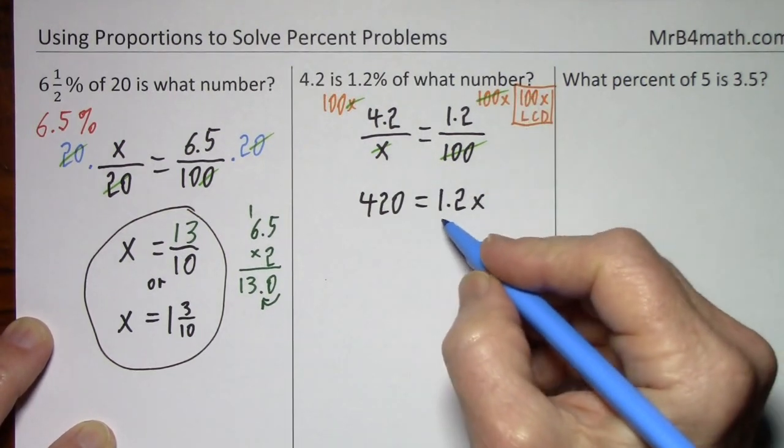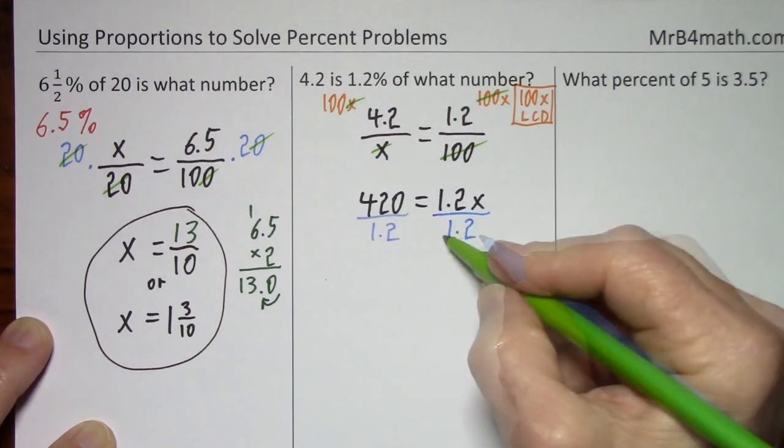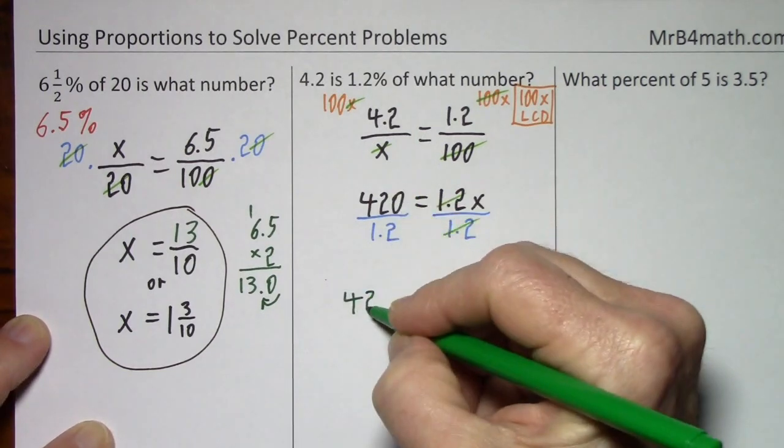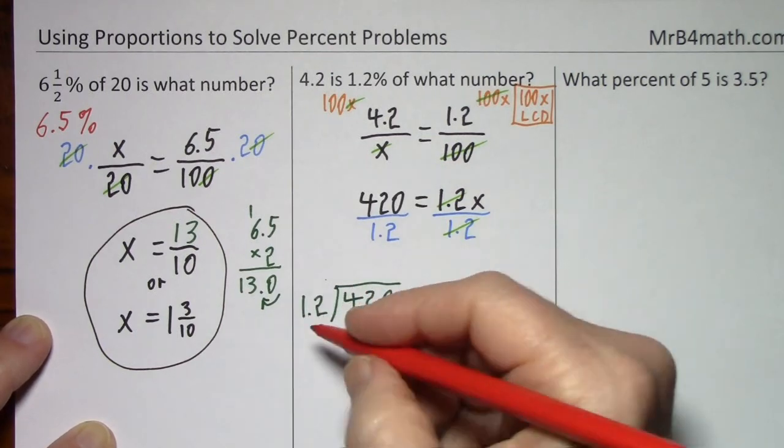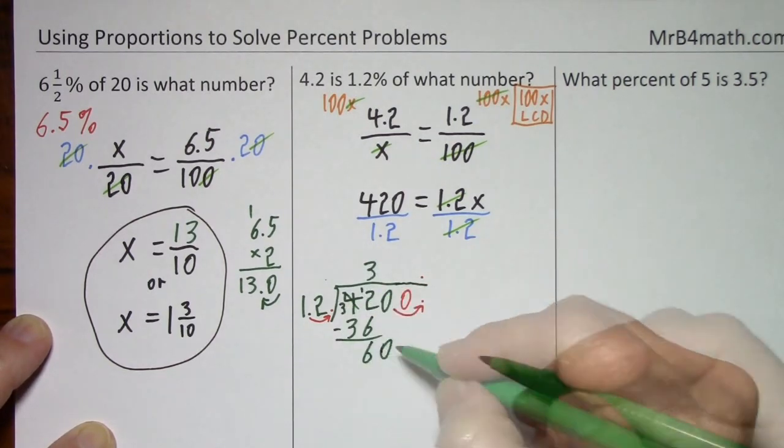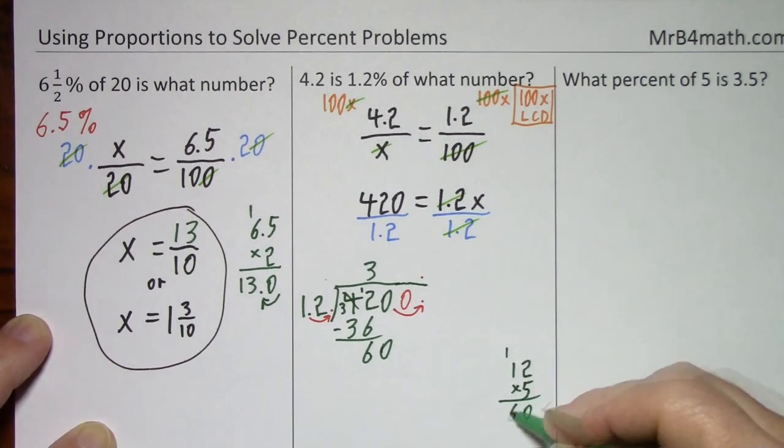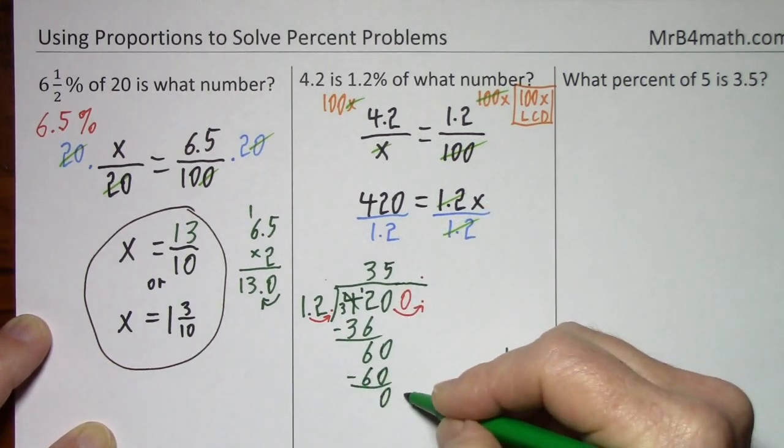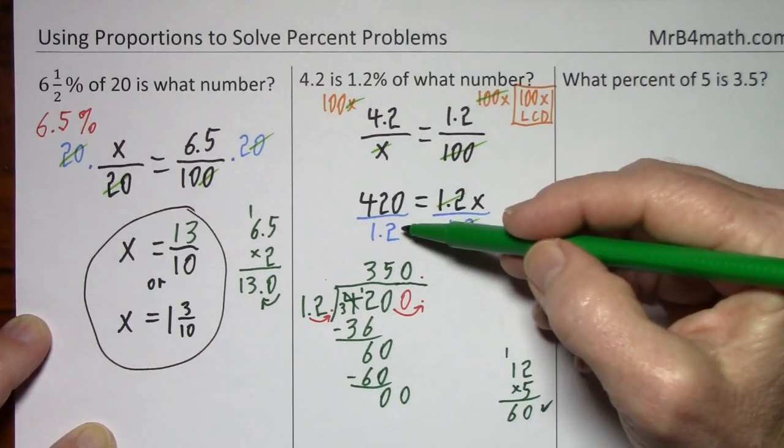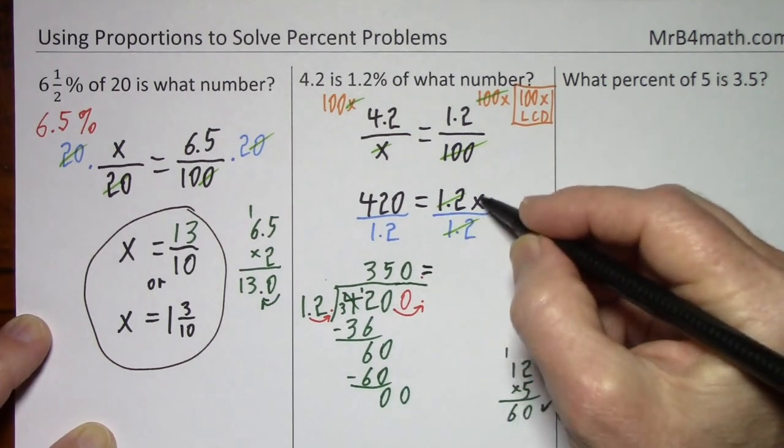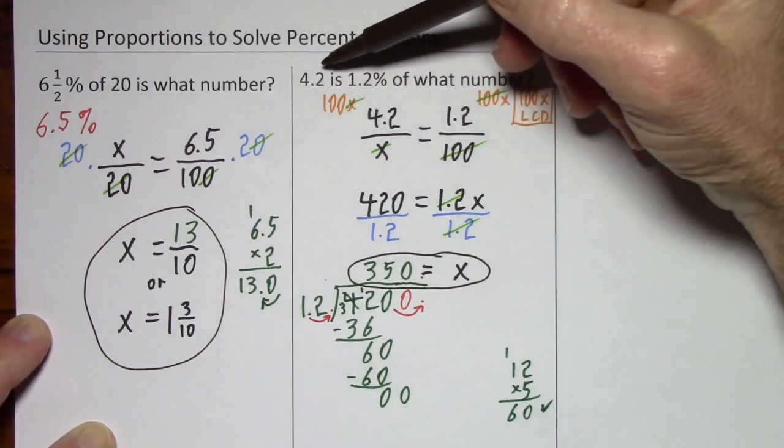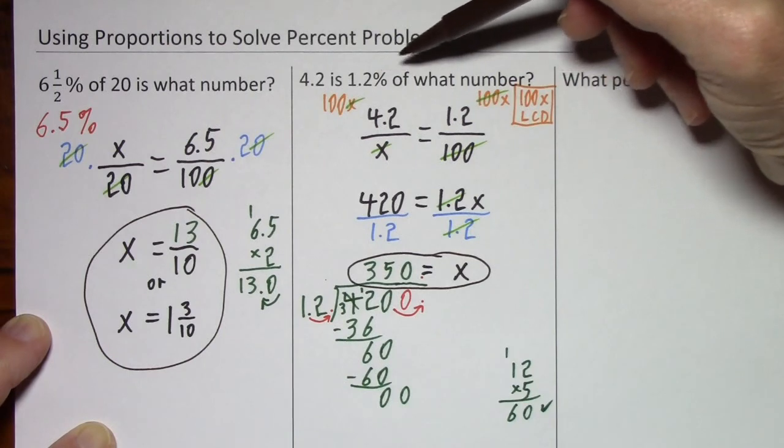You want x by itself. Get rid of the 1.2 with division on each side. Of course they cancel, and we have to do some long division. So 420 divided by 1.2 ends up being 350. Bring down your equals and the x. And what this says is 4.2 is 1.2% of 350.